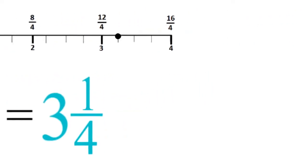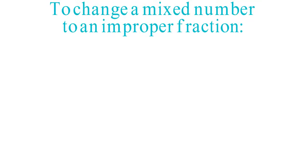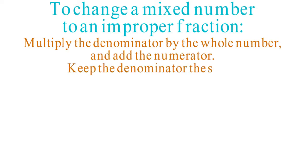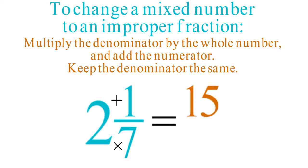To change a mixed number to an equivalent improper fraction, multiply the denominator of the fractional part times the whole number and add the numerator. Then keep the denominator the same. For example, to change 2 and 1 seventh to an improper fraction, multiply 7 times 2 equals 14 plus 1 equals 15. So the result is 15 sevenths.